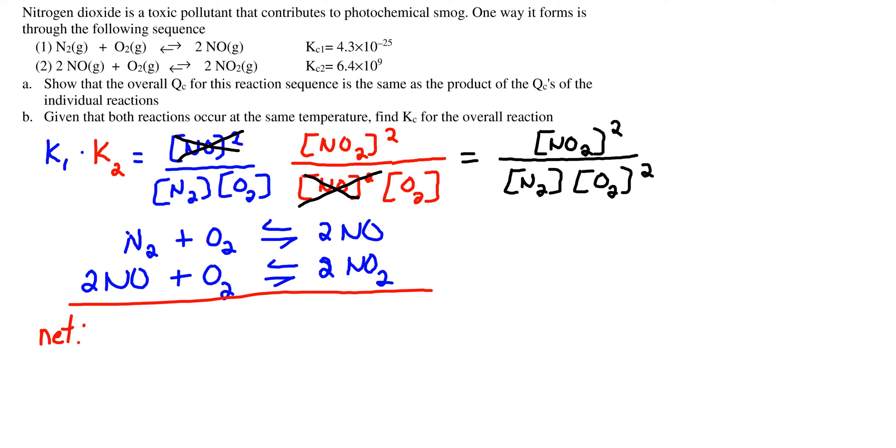Okay, we've rewritten the two equations 1 and 2, and we note when we sum these that two molecules of NO are produced in the first reaction and consumed in the second reaction.